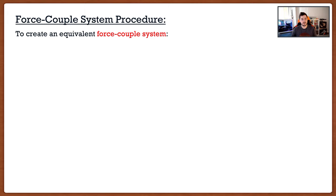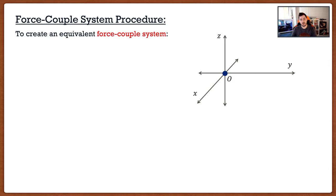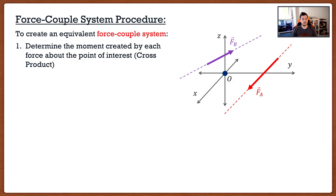So not too bad so far. Let's talk about the procedure, because procedure always helps students visualize what the steps are and why. If we want to create an equivalent force couple system — which basically just means resultant force and resultant moment — we take our 3D vector space, our two forces, and follow the same procedure. If I wanted to create a force couple system about point O, the steps would be as follows.